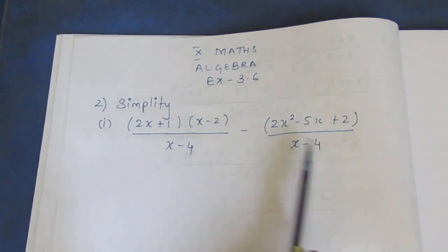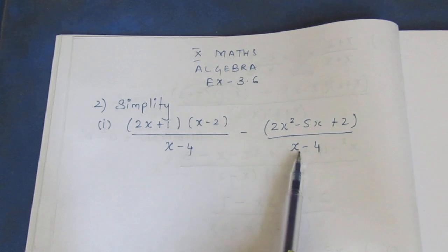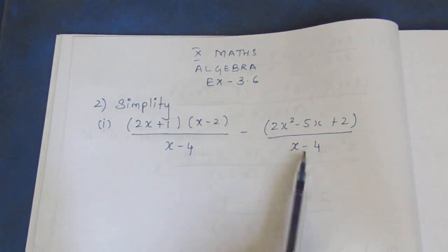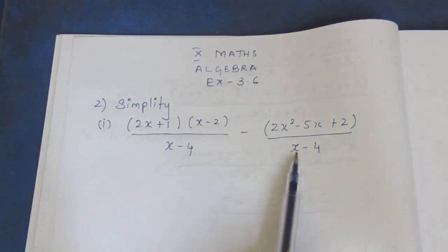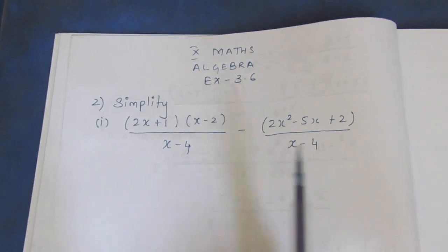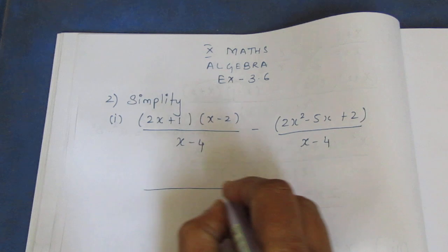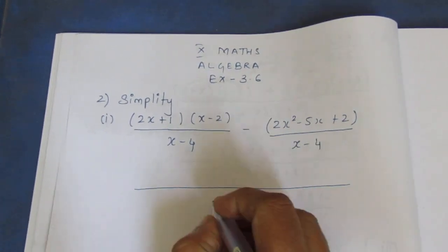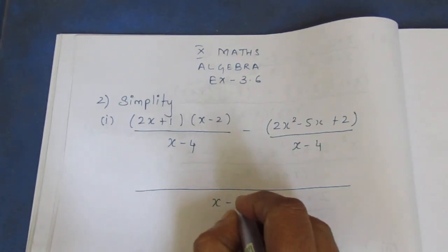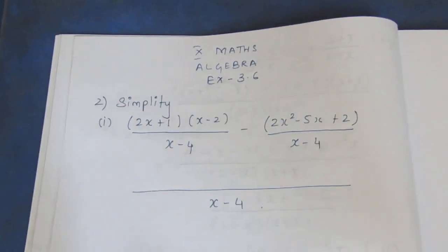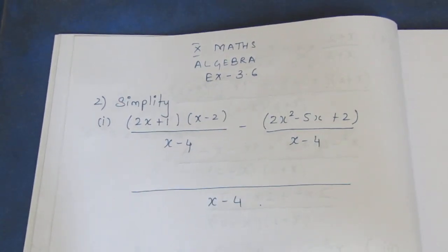The main denominator is the same — both fractions share the same denominator. So that is why we use this denominator. Let the denominator multiply.